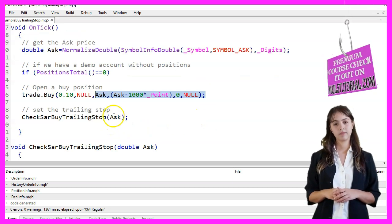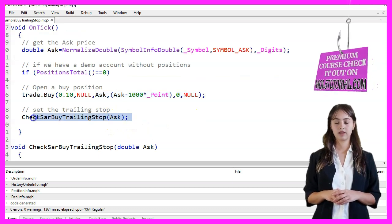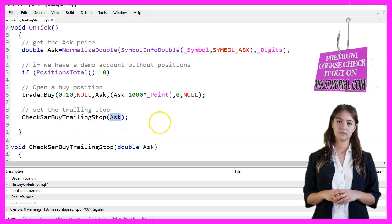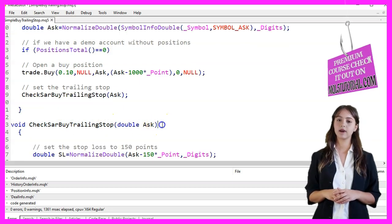After opening the buy position, we call the ChexarBuyTrailingStop function to set a trailing stop loss. This function takes the AskPrice as a parameter.